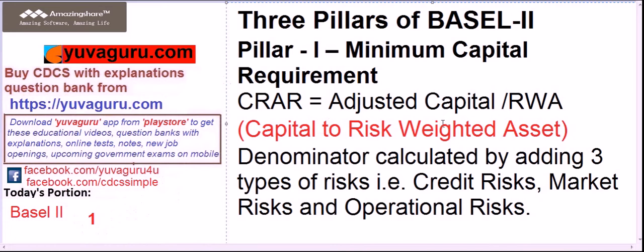RWA means Risk Weighted Asset — that asset which does not have any collateral, guarantee, or any form of backing. Whenever we calculate RWA, we take the total collateral, subtract it from the loan given, and the remaining part is the RWA.